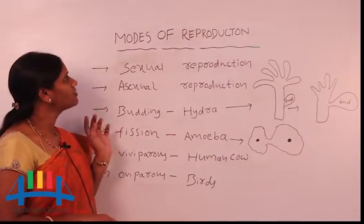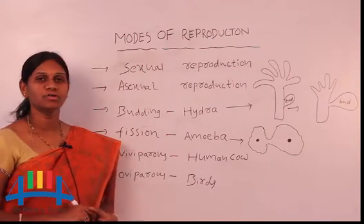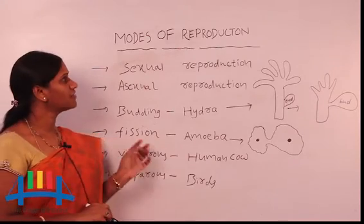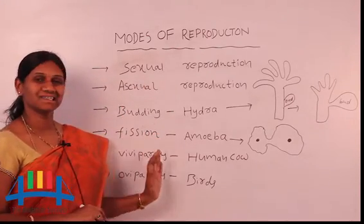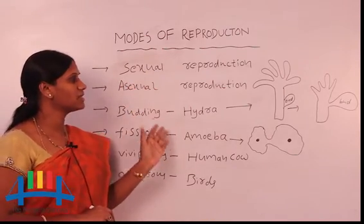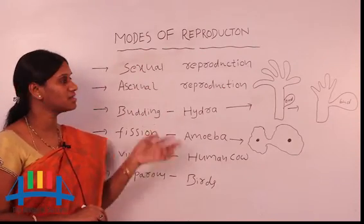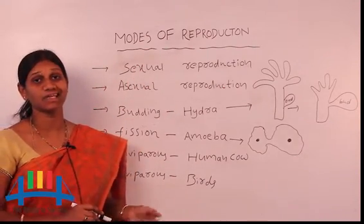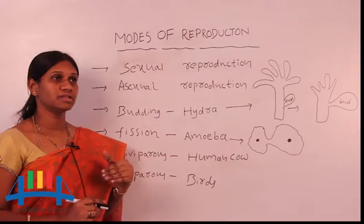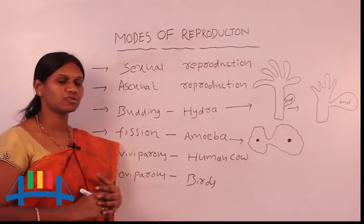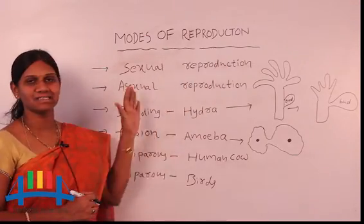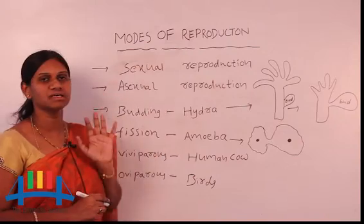Hello friends, today we are going to learn about modes of reproduction — the types of reproduction. When we look at reproduction, it occurs in plants and animals. What is going on in those organisms, what types are there — all of that is covered under modes of reproduction. Reproduction means they are going to give new offspring, also known as new generation. How we get a new generation in plants or animals is called reproduction.